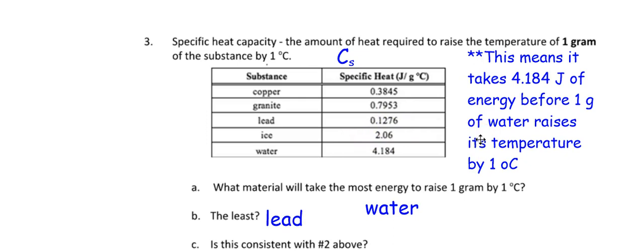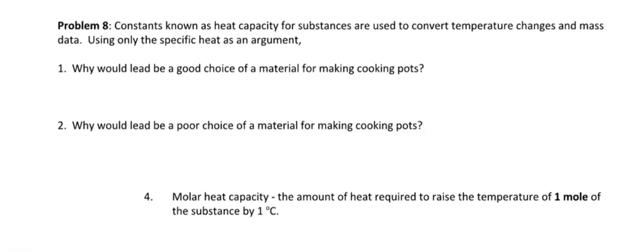It takes 4.184 joules of energy before one gram of water raises its temperature by one degree Celsius. Lead has the smallest specific heat value — 0.1276 joules per gram per degree Celsius — so it doesn't take much energy before lead starts heating up. Metals like copper and lead all have values less than one, while water is 4.184, so water requires much more energy before its temperature rises.